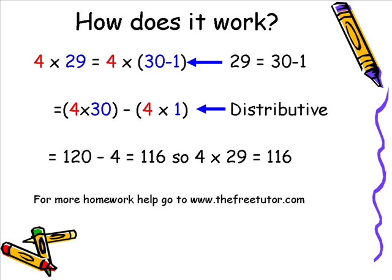One more example using the distributive property: say we have 4 times 29. We know 29 is really 30 minus 1, so instead of 4 times 29 we say 4 times (30 minus 1). Using the distributive property: 4 times 30 minus 4 times 1. We can quickly multiply 4 times 30 to get 120, and 4 times 1 is 4. So 120 minus 4 is 116, meaning 4 times 29 equals 116. These are just a few examples of how properties help you solve problems quickly and prepare for pre-algebra and algebra.